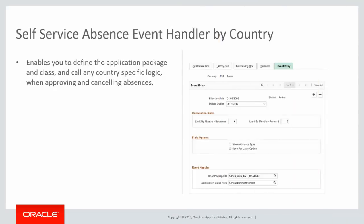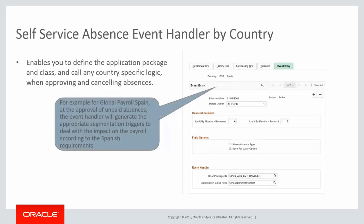PeopleSoft Self-Service Absence Event Handler by Country enables you to define the application package in class and call any country-specific logic when approving and canceling absences. For example, for Global Payroll Spain, at the approval of unpaid absences, the Event Handler will generate the appropriate segmentation triggers to deal with the impact on the payroll according to the Spanish requirements. This completes our discussion of the Self-Service Absence Event Handler by Country feature.